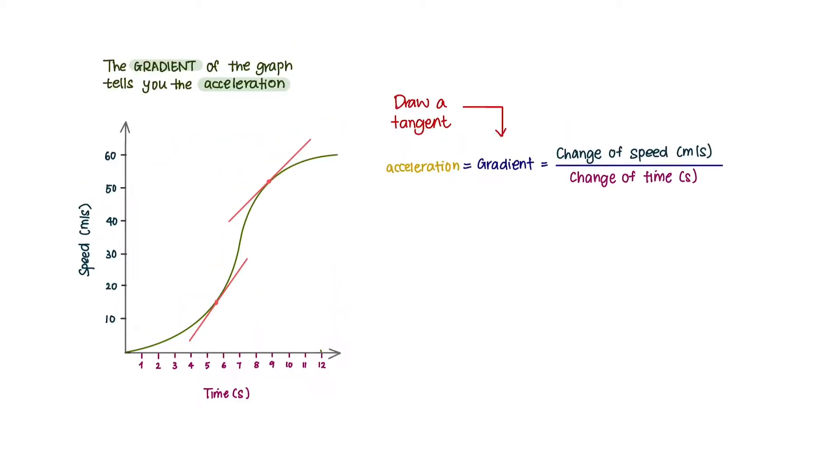To calculate the gradient, you have to first draw a tangent like this. Take two points and you will obtain your acceleration.